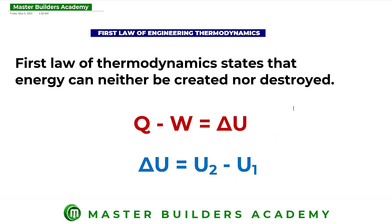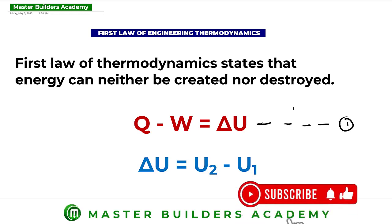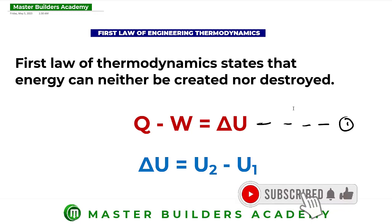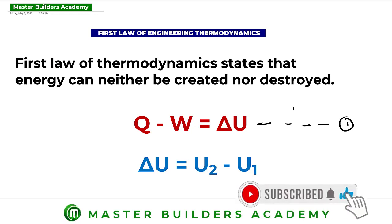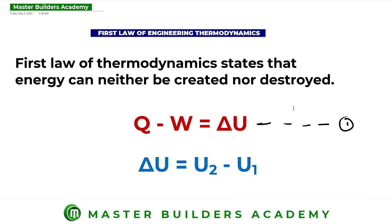The first law of thermodynamics is given as Q minus W equals the change in U. We can call this equation one. Most of the problems we are going to solve under this category will use equation one, where Q represents heat and W represents work done.